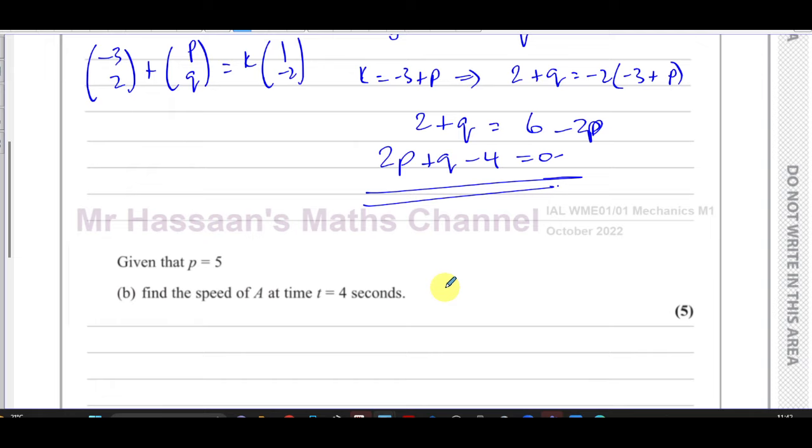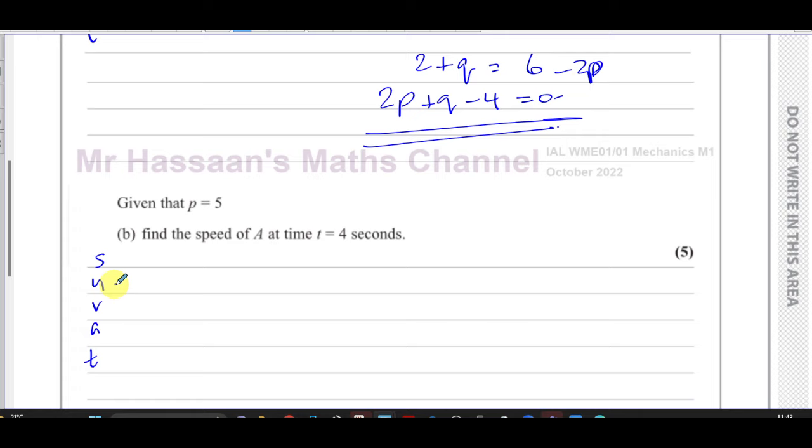We can think of the SUVAT equations and let's see what we have from SUVAT. We know the initial speed was 0 because it's at rest. v is what I need to find. The acceleration I can try to find. I know the acceleration is the force divided by the mass, because F equals ma.